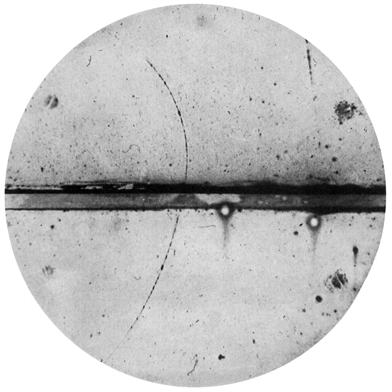A black background makes it easier to observe cloud tracks. Typically, a tangential light source is needed, which illuminates the white droplets against the black background. Often the tracks are not apparent until a shallow pool of alcohol is formed at the condenser plate. If a magnetic field is applied across the cloud chamber, positively and negatively charged particles will curve in opposite directions. According to the Lorentz force law, strong enough fields are difficult to achieve, however, with small hobbyist setups.